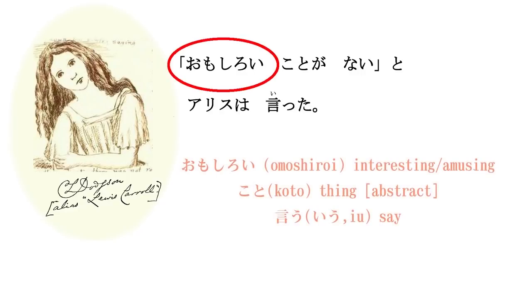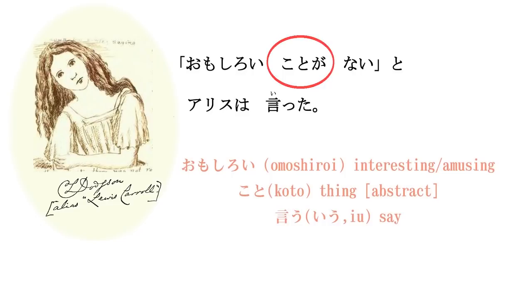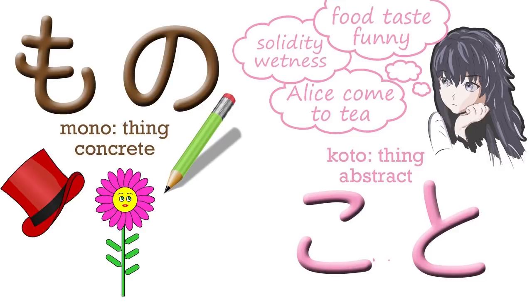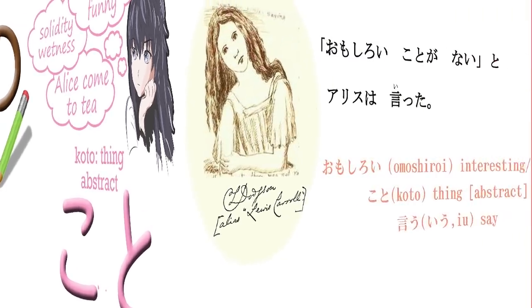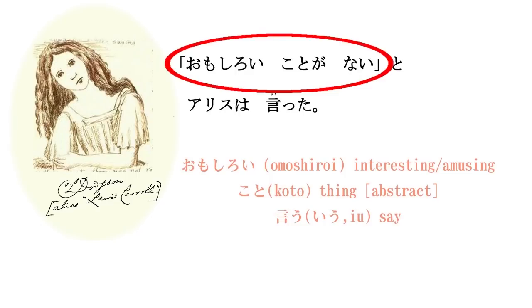Omoshiroi means interesting or amusing. Koto means a thing, and in Japanese we have two common words for thing: mono and koto. A mono is a physical thing – a hat, a book, a pair of glasses, Mount Fuji. Koto is a more abstract kind of thing – an affair, a matter, a circumstance. So omoshiroi koto ga nai means there's nothing interesting going on here, no interesting circumstance.